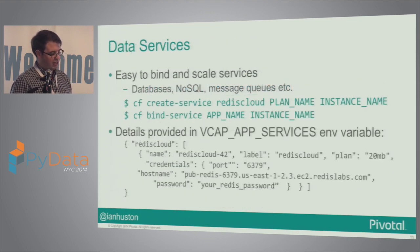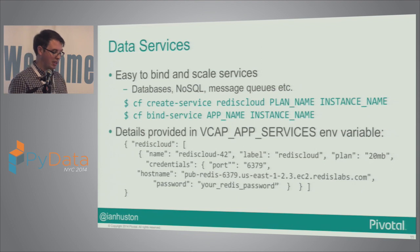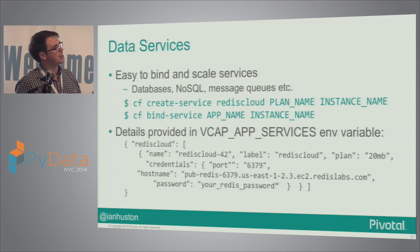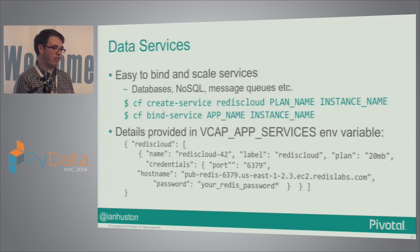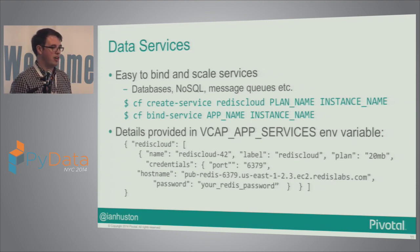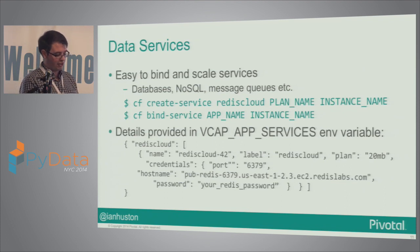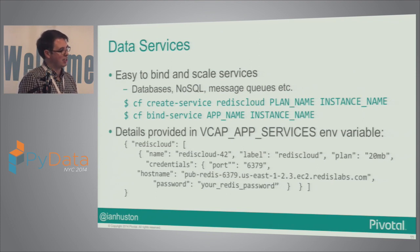Just before that, I want to talk about data services. To get access to a database, NoSQL service, or a message queue, it's really as simple as just a few command line commands. You do create-service, maybe you want a Redis Cloud — that's a third-party provider of Redis instances in the cloud. You specify the plan name, which is just their billing plans, and give it an instance name. Then you just bind it to your app. It's provided in an environmental variable to your application — in Python, all you need to do is look at VCAP_SERVICES, and it gives you the port, URL, hostname, password, and username into that service.